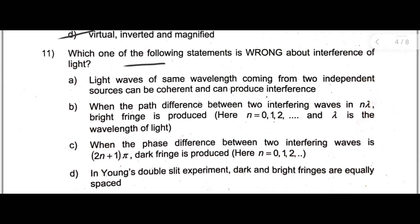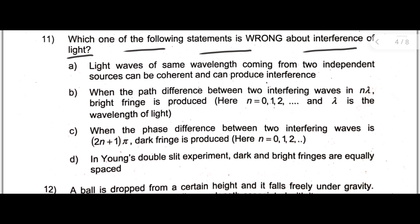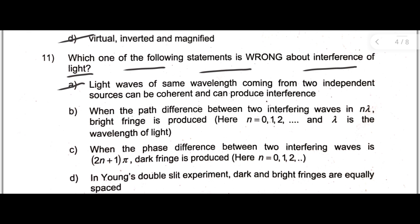Which one of the following statements is wrong about interference of light? Here four options are given. In that, option A: Light waves of same wavelength coming from two independent sources can be coherent and can produce interference - this is a wrong statement.